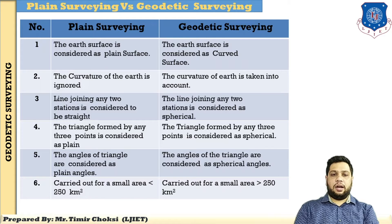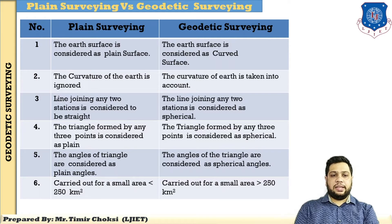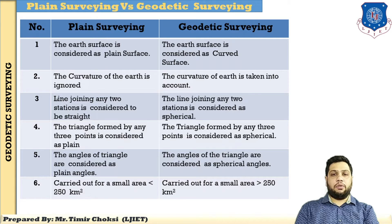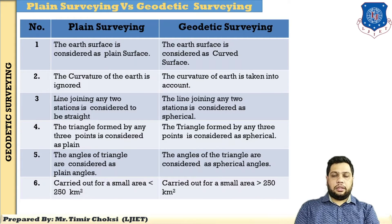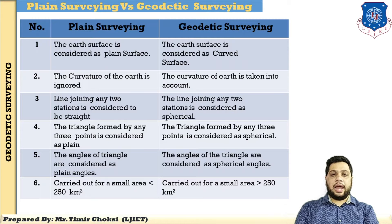In plane survey the earth's surface is considered as a plane, but in geodetic survey it is considered as a curve. Second difference: the curvature of the earth is ignored in plane survey, but the curvature of the earth is taken into account — which is considerable — in geodetic survey. Third: in plane survey, the line joining any two stations is considered as a straight line, but in geodetic survey it is considered as a curve.